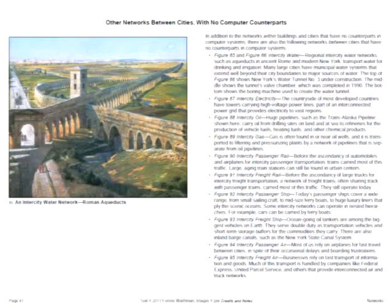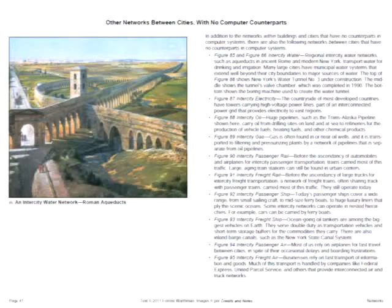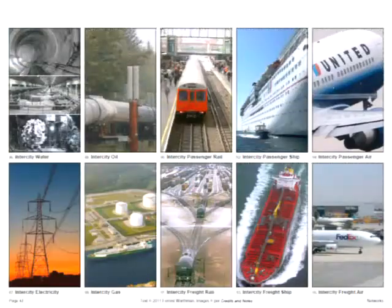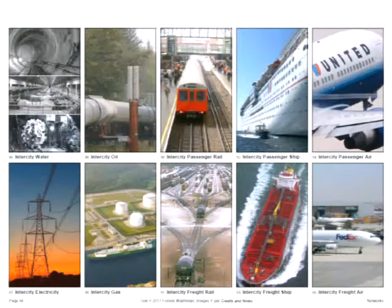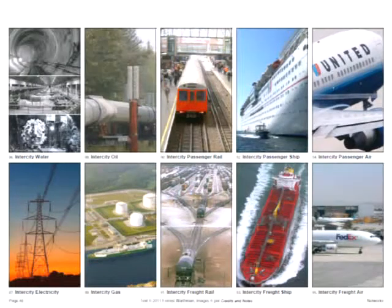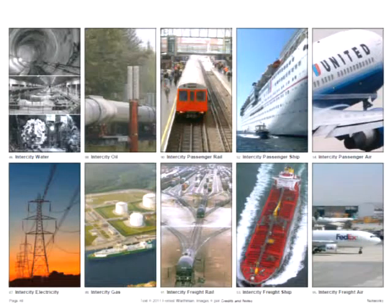Other networks between cities with no computer counterpart include an aqueduct from Rome serving multiple cities, intercity electricity networks, oil pipelines, gas pipelines, two flavors of rail — passenger and freight — two flavors of ship — passenger and freight — and two flavors of air — passenger and freight.